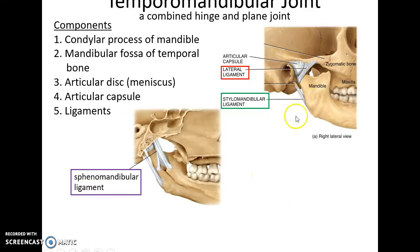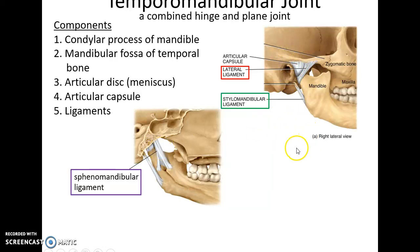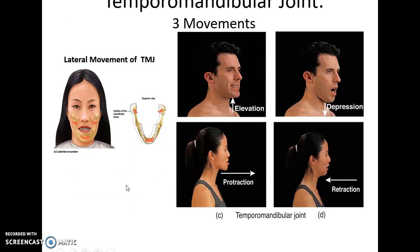The temporomandibular joint is one you need to know. It has lots of ligaments, with the mandibular condylar process fitting into the temporal bone's mandibular fossa. There's an articular disc within that joint, an articular capsule, and ligaments. It allows for three kinds of movements: lateral movement side to side, elevation and depression of the jaw, and protraction and retraction of the mandible.